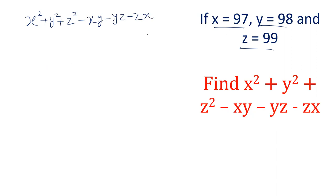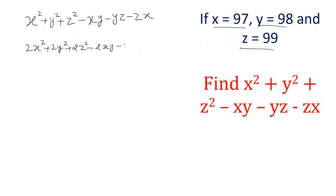Multiply this equation by 2 and divide by 2, so that becomes twice of each term. We can directly write 2x² + 2y² + 2z² - 2xy - 2yz - 2zx. As we have multiplied each term by 2, we have to divide by 2.